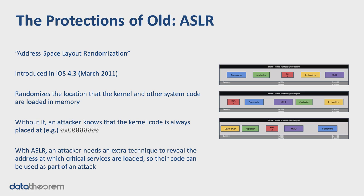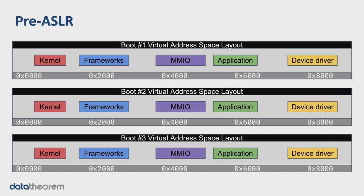Before we get into the attack itself, there's some background to cover. The first is ASLR, or address-based layout randomization. ASLR has been around a long time — about 10 years in iOS by this point — and it's a standard security feature. In the pre-ASLR days, the address space always looks the same. I have a visualization here of the virtual address space across three device boots, and all the boxes are always in the same place: the kernel is always near the bottom, memory-mapped IO is always in the middle, device drivers are always on the high end.